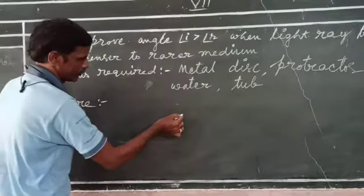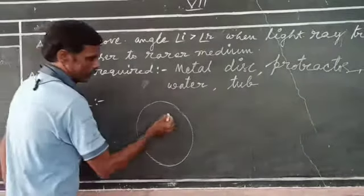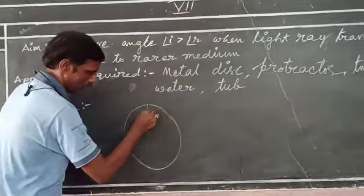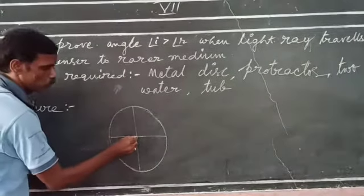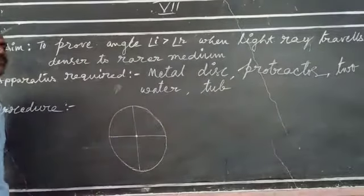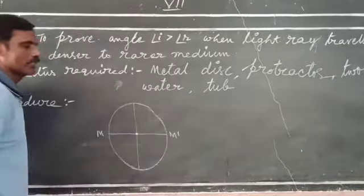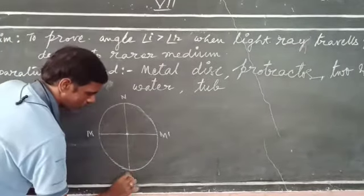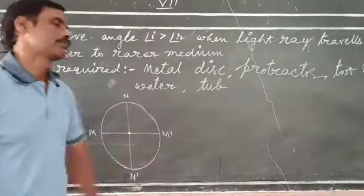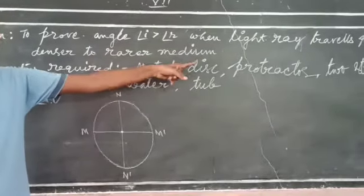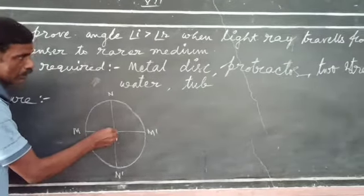Take a metal disc and draw two perpendicular lines through the center of the metal disc. Mark one line as M and M-dash and the other as N and N-dash. Now place a protractor such that the center of the protractor coincides with the center of the metal disc.